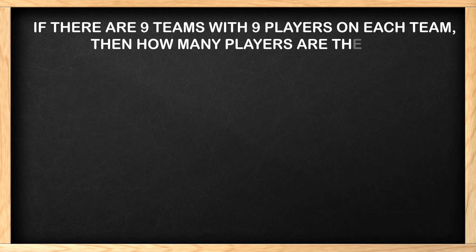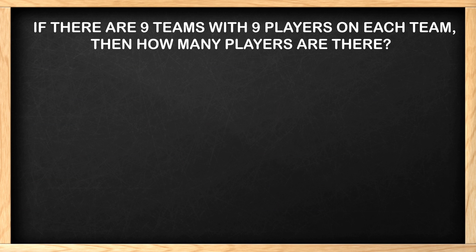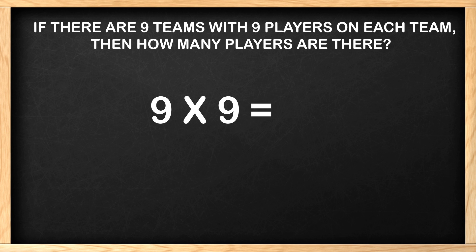The new problem says if there are nine teams with nine players on each team, then how many players are there? We could start by making tally marks to help us solve this problem. We have nine teams and each team has nine players. We basically have nine groups and we'll put nine tally marks in each box. Then we will count them all to see how many players there are. Wait a minute! This drawing will definitely work, but it will take me forever! So let's look at the equation for this problem. We have nine groups of nine. Do you think we are multiplying or dividing? We are multiplying! We now have our equation of nine times nine equals blank. Using your multiplication skills, what is nine times nine?